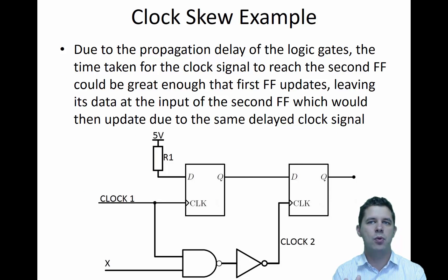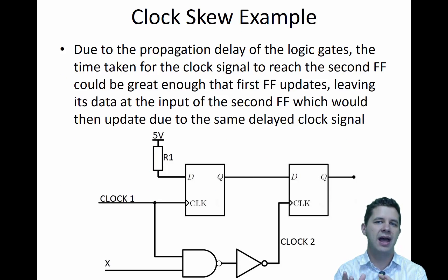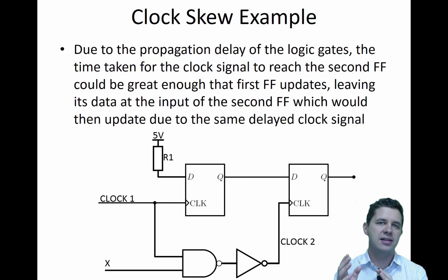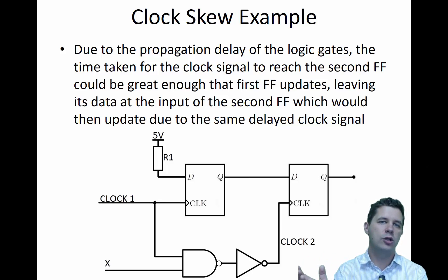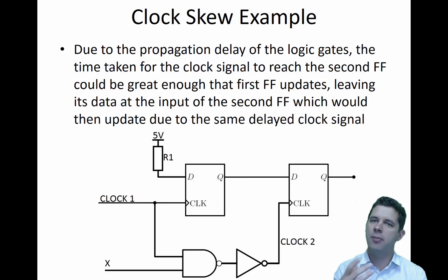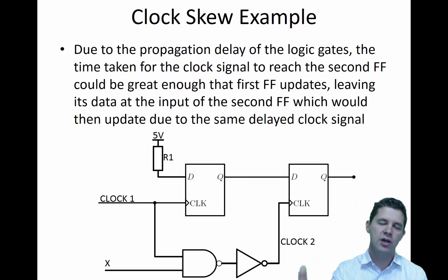Here's one example where we've got some propagation delay going through the NAND gate and the NOT gate at the bottom there, which causes clock two to be slightly skewed with respect to clock one. It might be in the order of 15 to 20 nanoseconds — a fairly small amount.